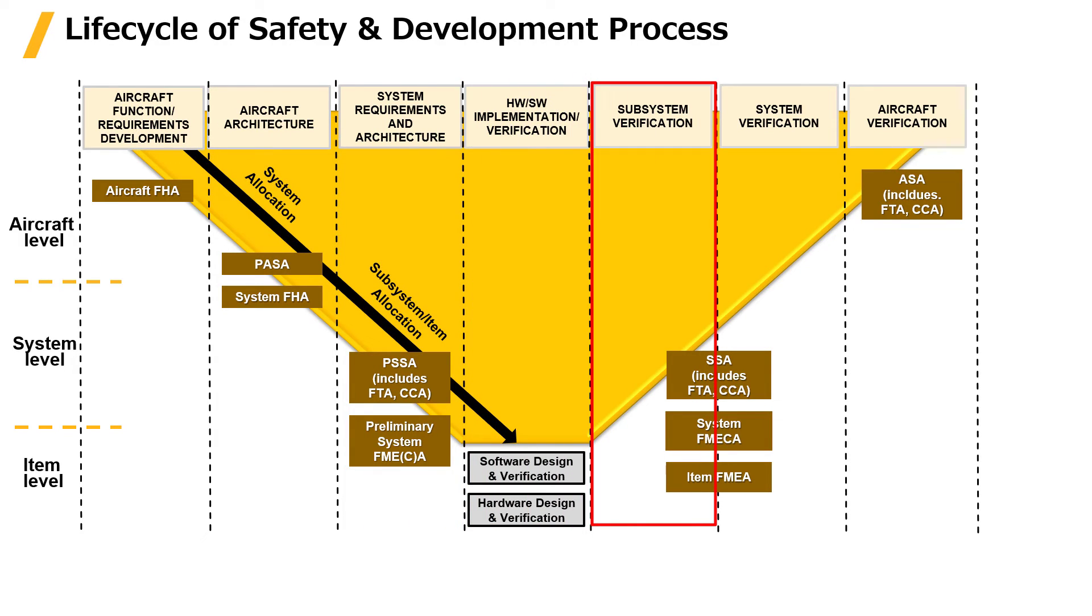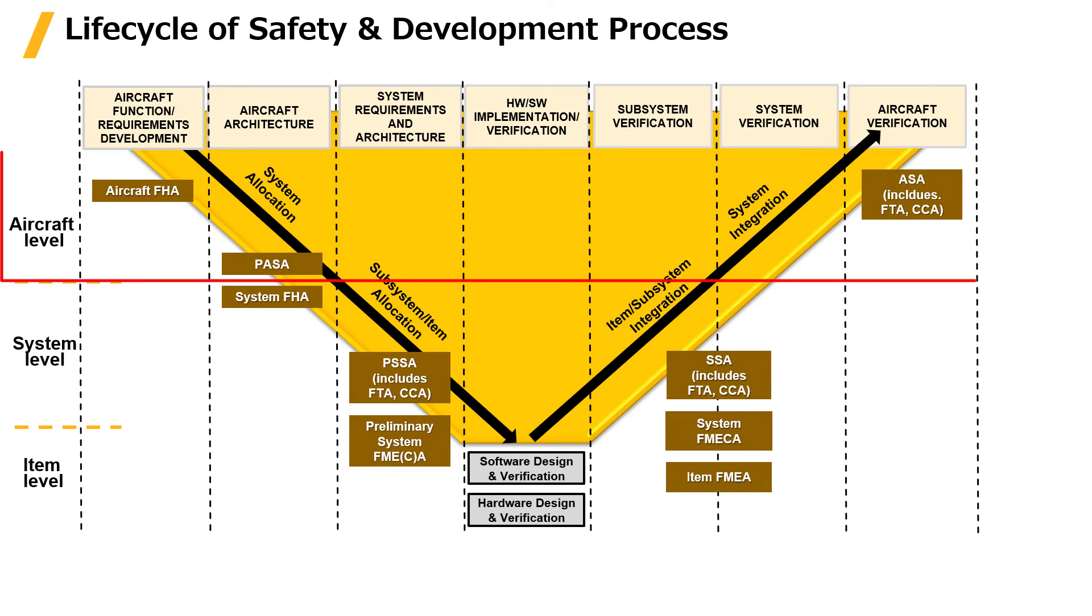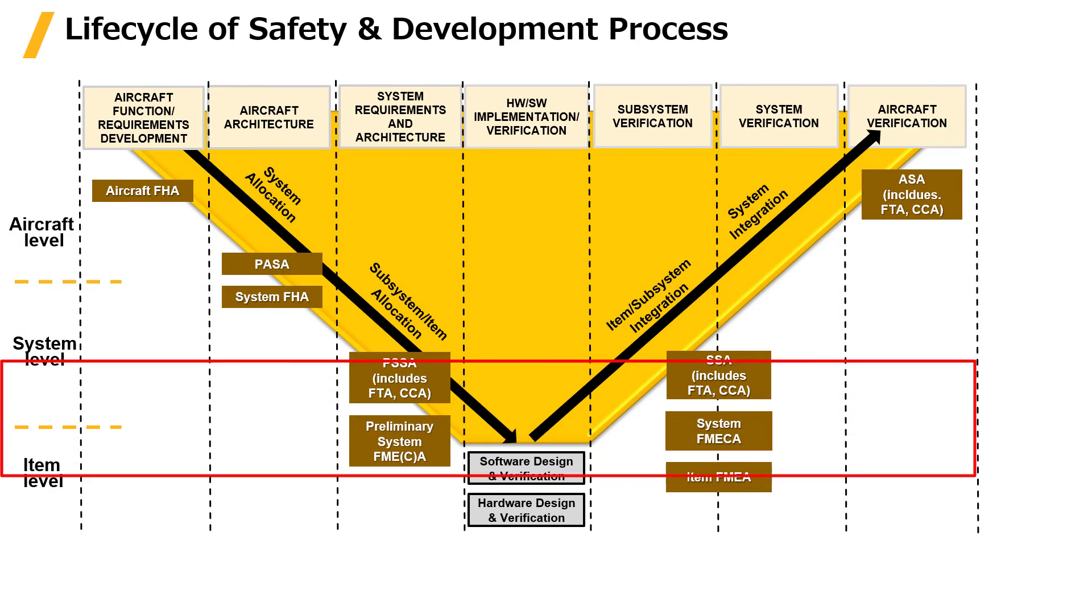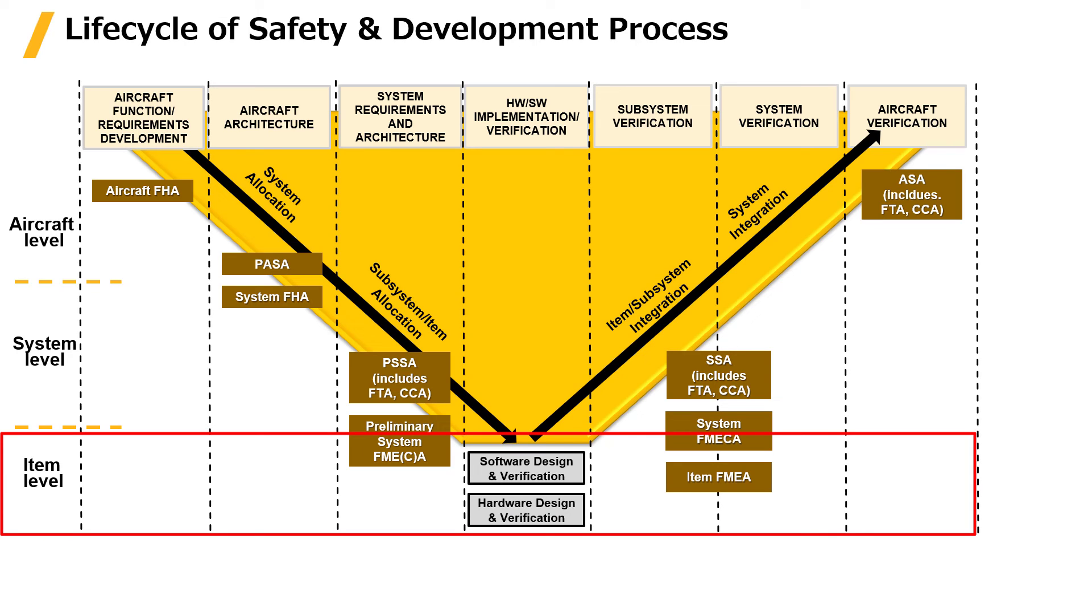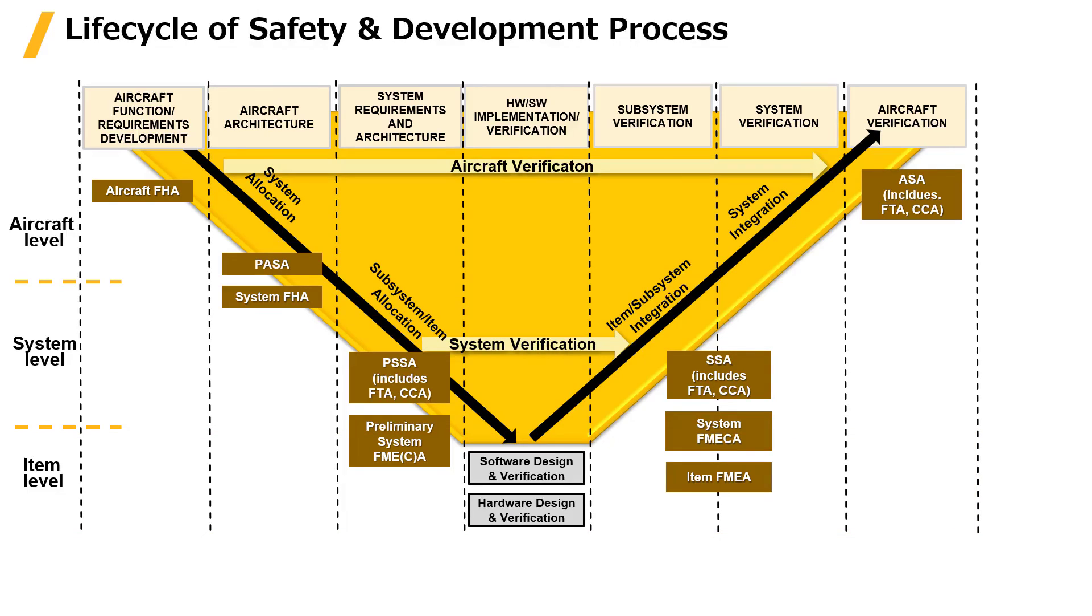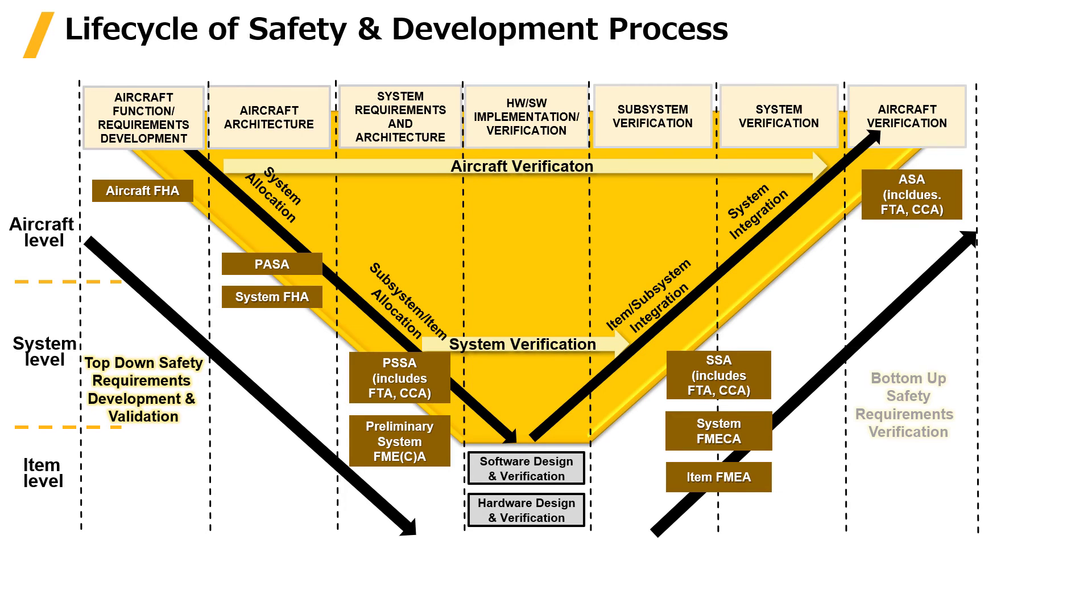Then shift to subsystem level verification, system level verification, and finally ends with aircraft level verification. Taking this activity as the vertical axis, aircraft level, system level, item level activities can be assumed as the horizontal axis. Analytical activities in aircraft development are then mapped out in this way. You can see that the flow goes from aircraft level to item level development and validation, then returns from item level verification to aircraft level verification.